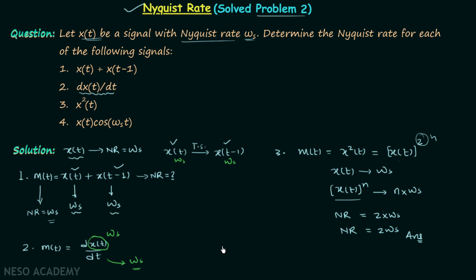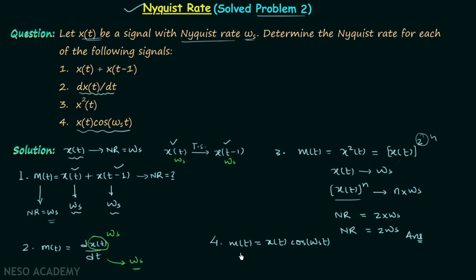That is the answer for the third signal. Now we will calculate the Nyquist rate of the final signal, which is x(t) multiplied by cos(ω_s t). This question is a little more complicated compared to the straightforward ones, as the message signal is the product of two signals.